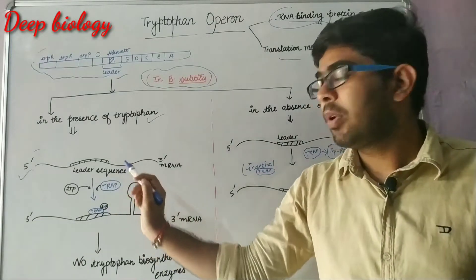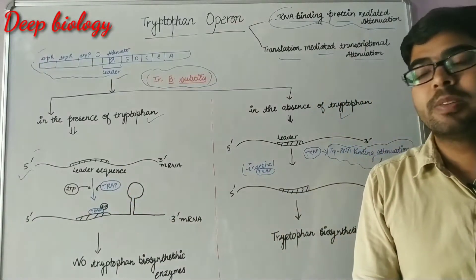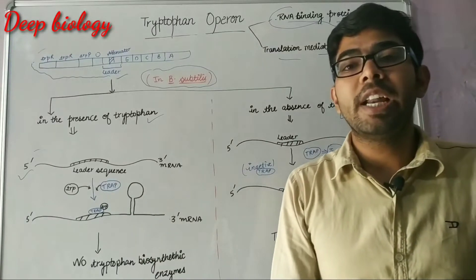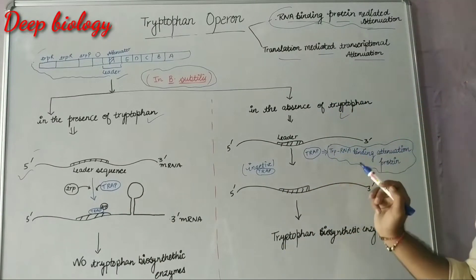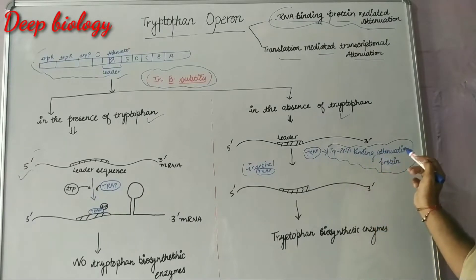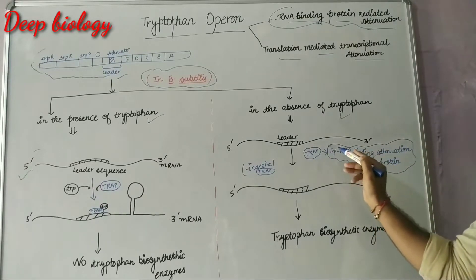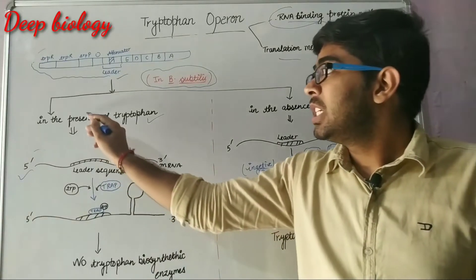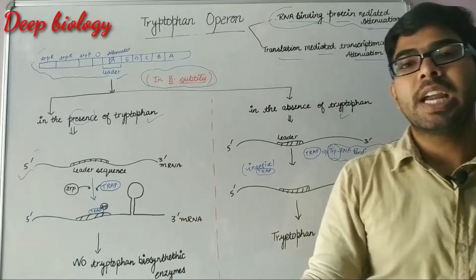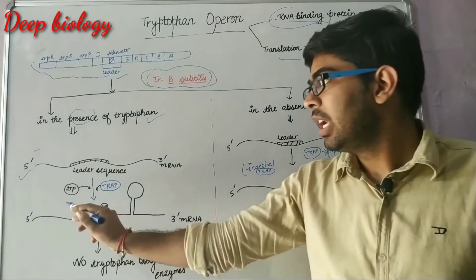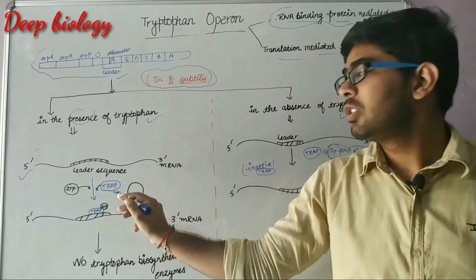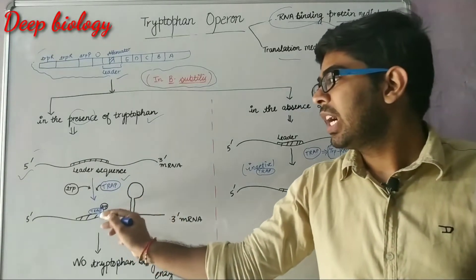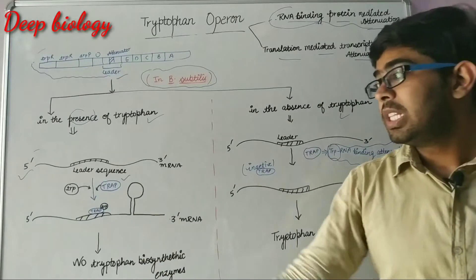There is a protein in the cytoplasm that is TRAP. This TRAP stands for TRP RNA binding attenuation protein. Here TRP is tryptophan. When there is presence of tryptophan in the cytoplasm, then this tryptophan amino acid binds to this TRAP protein and leads to the activation of this TRAP protein.